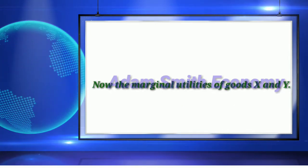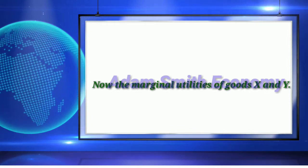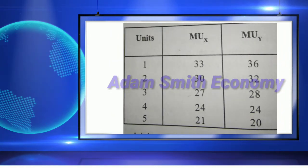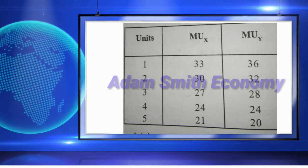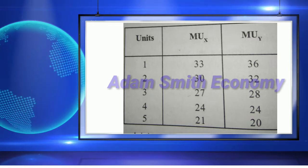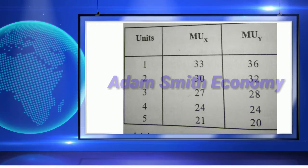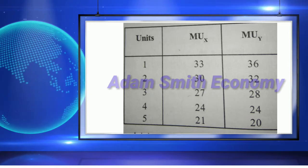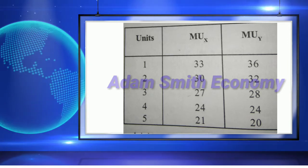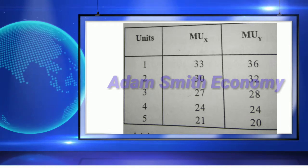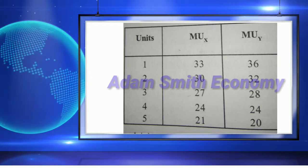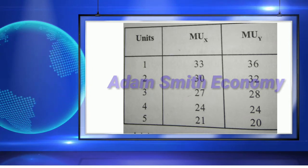Now the marginal utilities of goods X and Y are shown in this picture. In order to explain the consumer's maximum satisfaction and equilibrium positions, we have to divide the marginal utility of X (MUx) by its price Rs 3, and the marginal utility of Y (MUy) by Rs 4.